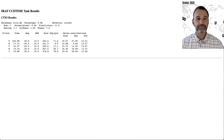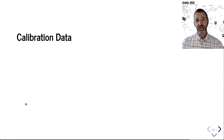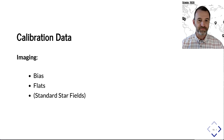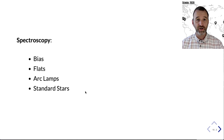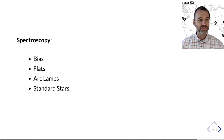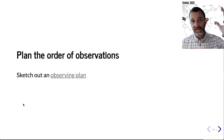The data you take isn't just your science targets — you'll almost certainly need calibration data. That means taking biases and flats. If you're doing imaging, you may want standard star field observations, though that's becoming less important. If you're doing spectroscopy, you'll want all of those plus a spectrophotometric standard star to calibrate your instrument, and you also need an arc lamp exposure to calibrate wavelengths. Plan out the time required for all of this calibration.